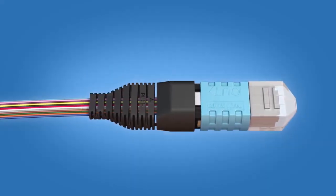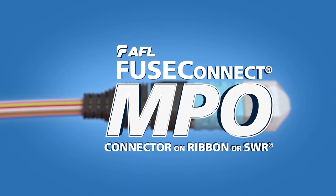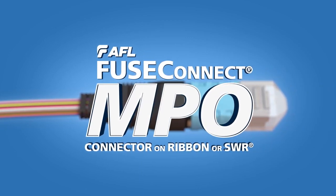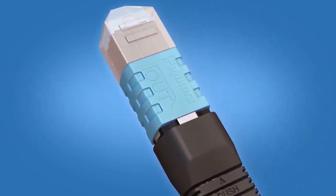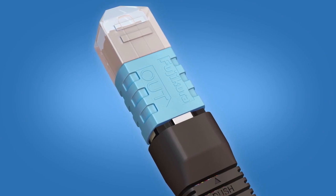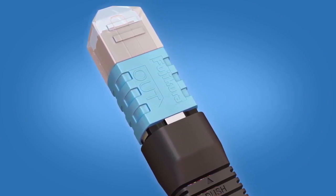This video provides termination instructions for AFL Fuse Connect MPO connectors on ribbon or spiderweb ribbon. These step-by-step instructions demonstrate the termination of a Fuse Connect MPO connector with a heat sleeve on ribbon using a Fujikura 90R Fusion splicer.